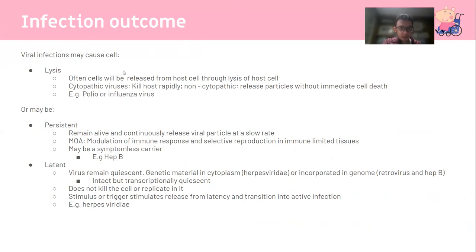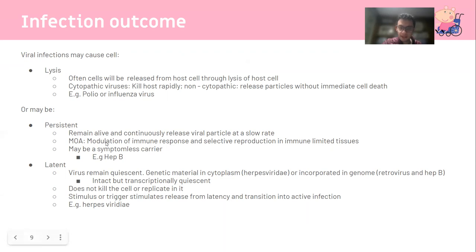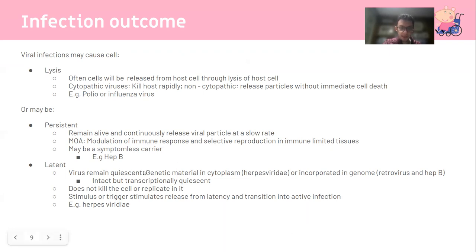Infection can lead to lysis of the cell - a cytopathic virus kills the host rapidly, while a non-cytopathic virus releases particles without immediate cell death. Persistent infections are long-lived, continuously releasing viral particles at a slow rate. These are particularly dangerous because infected individuals may be asymptomatic carriers, spreading disease in the community, and can cause chronic damage like hepatitis B and C leading to cirrhosis. Latent viruses such as varicella zoster become dormant in the dorsal ganglion and then reactivate. These viruses remain quiescent - not transcriptionally active, not killing or replicating - until a stimulus triggers reactivation.